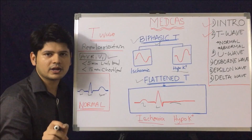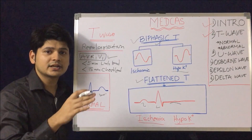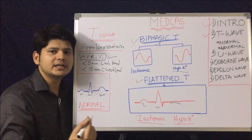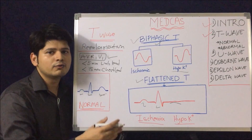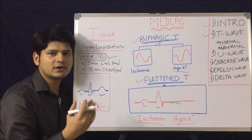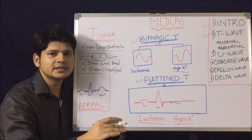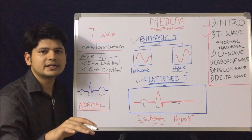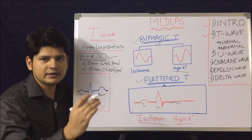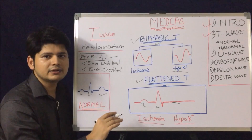How to differentiate whether flattened T is ischemia or hypokalemia? Ischemia is a vascular problem, so the flattened T waves of ischemia will appear in contiguous leads — for example, leads 2, 3, and AVF for the inferior territory, or V5, V6, lead 1, and AVL for the lateral territory. If T wave flattening is in contiguous or localized leads, it's an ischemic event. If T wave flattening is seen in almost all leads, it can be a metabolic process like hypokalemia. So now we have understood normal T wave and abnormal T waves: tall T, inverted T, biphasic T, and flattened T.